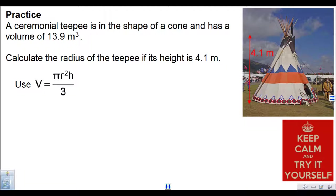You're going to try a question now. A ceremonial teepee is in the shape of a cone and has a volume of 13.9 cubic meters. Calculate the radius of the teepee if its height is 4.1 meters. There's the volume formula for a cone. Volume is given to you and height is given to you — you're asked to find the radius. Pause the video, give the question a shot, and when you're ready to check your answer, press play. Good luck.